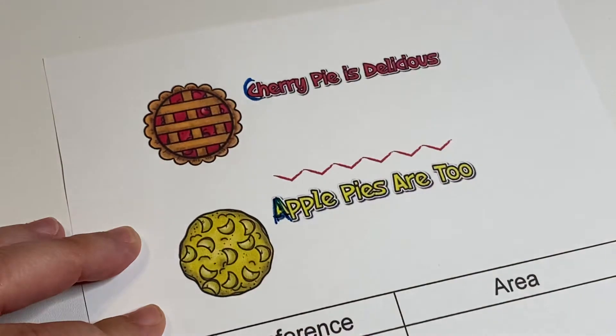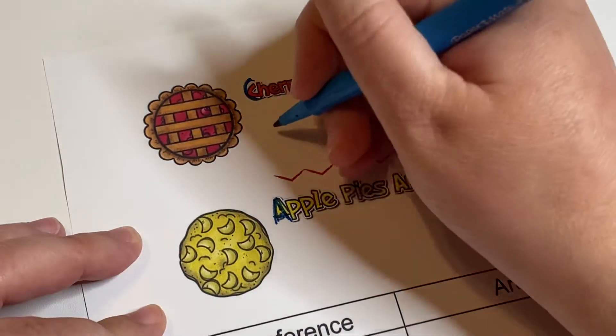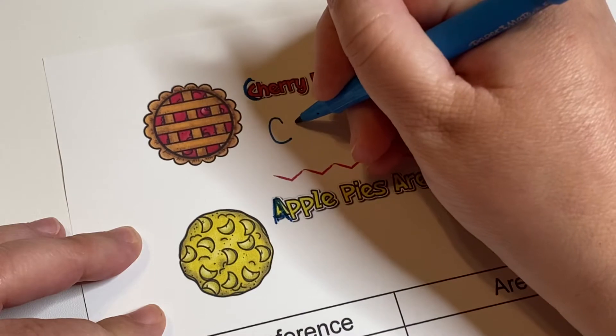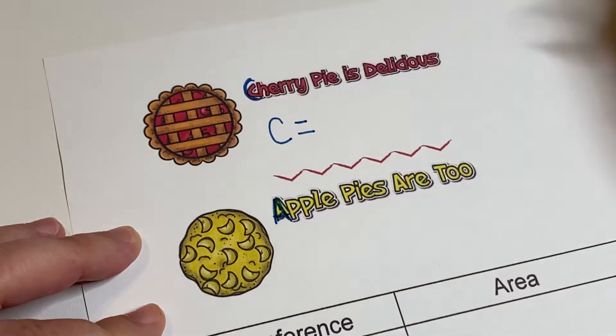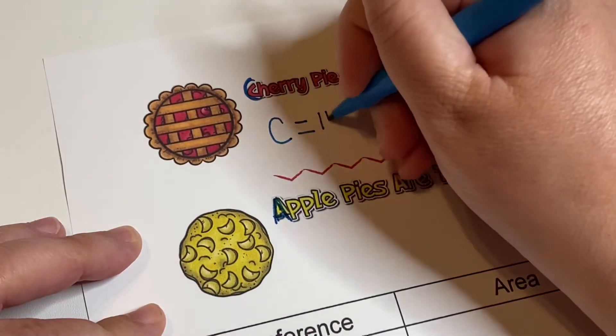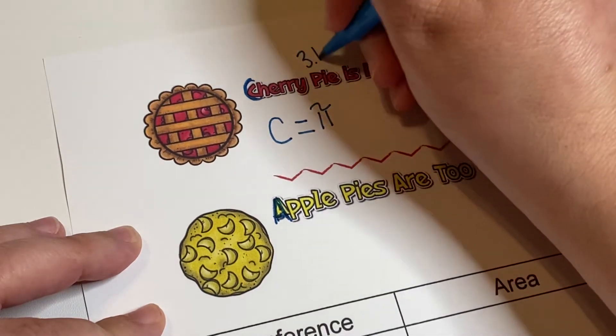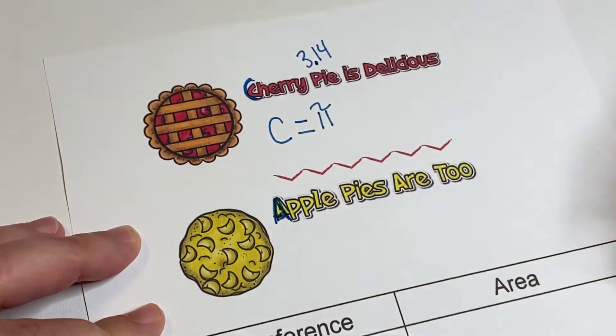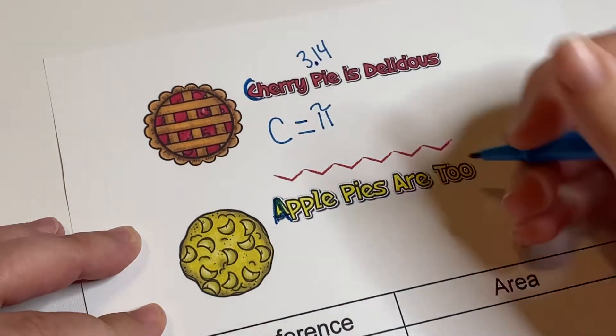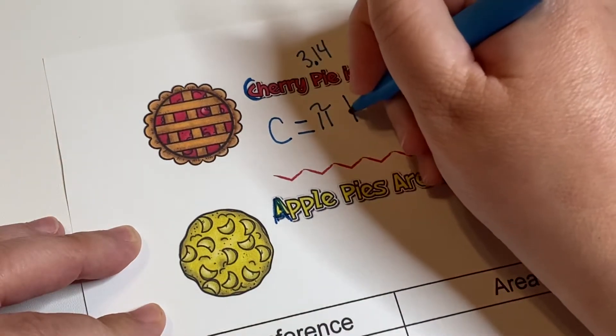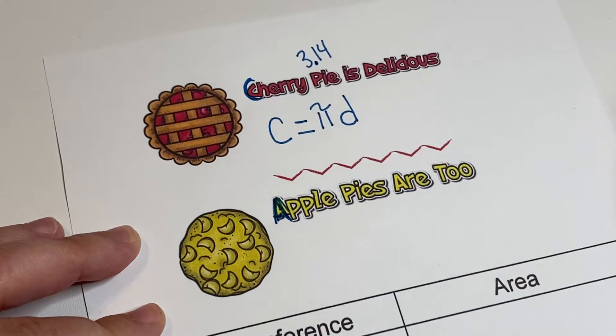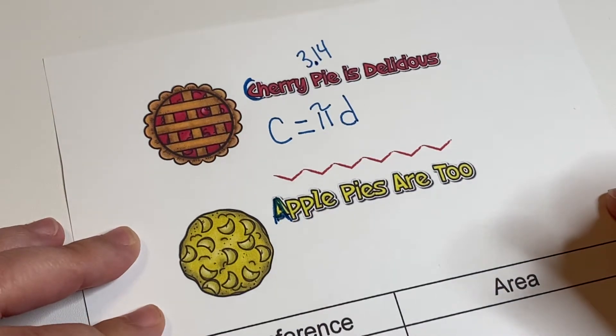So cherry pie is delicious is going to be C, the circumference, is equal to π. The pie is going to stand for π and we're going to use 3.14 for π. And then is delicious, so that's π times the diameter, D for diameter. Okay, so there's your formula for the circumference of a circle.